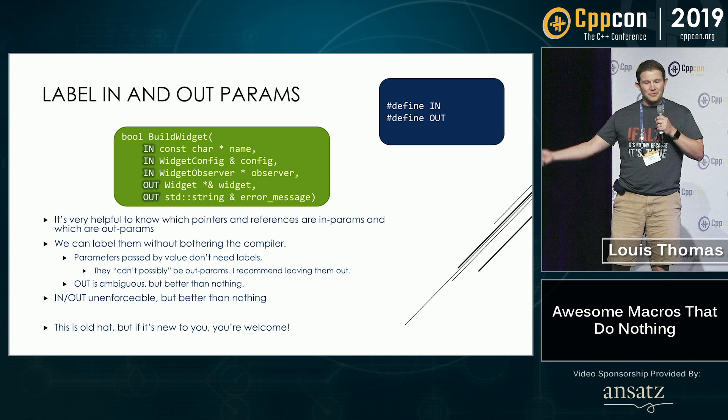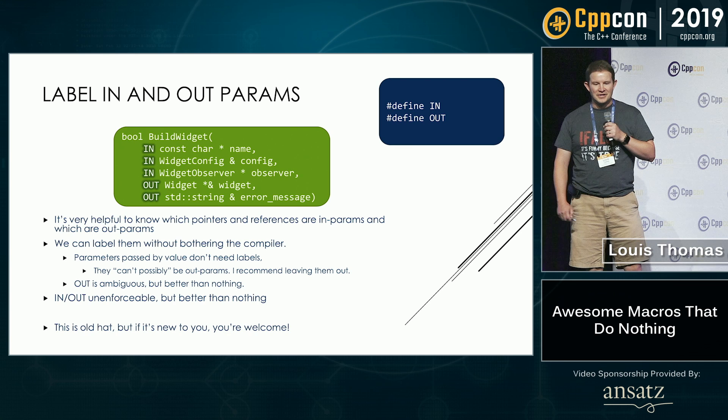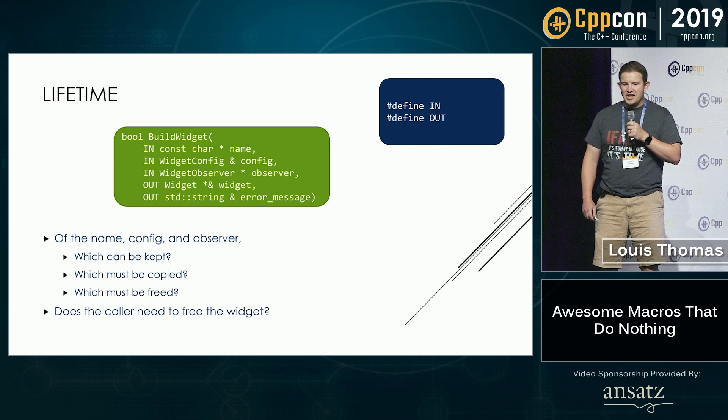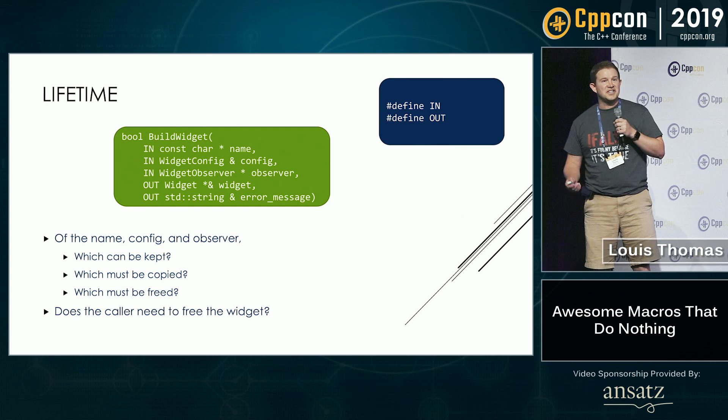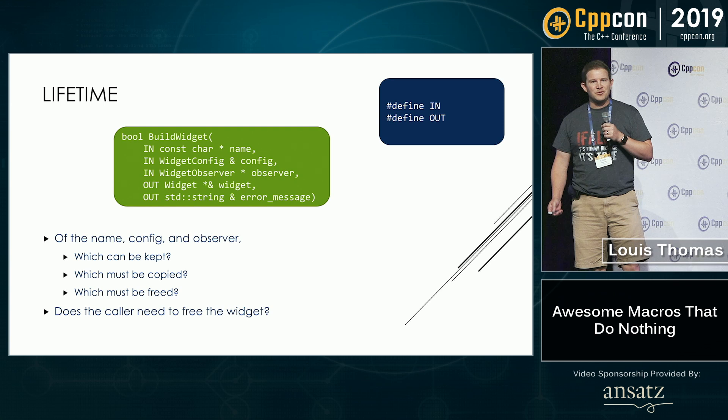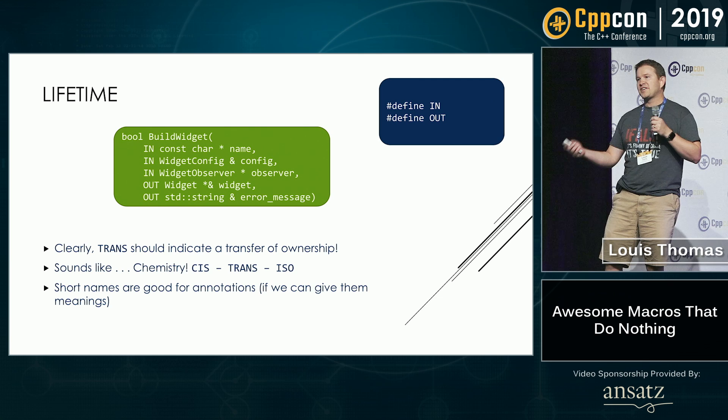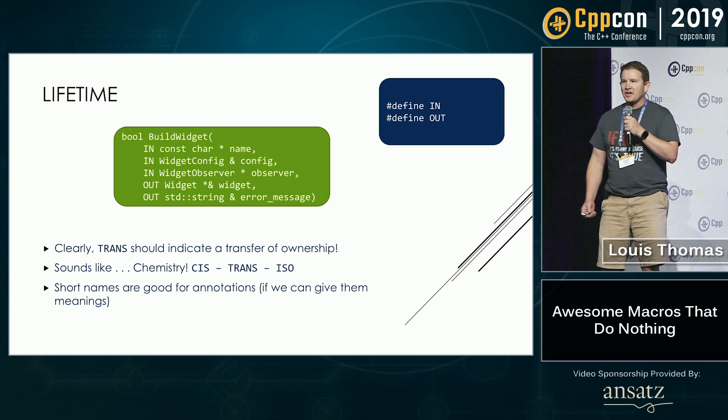So now this is old hat, but if it's new to you, you're welcome. Is there anything else we want to know? What about lifetime? We've got five pointers — which of these can we keep? Which do we need to copy if we want to keep them? Which do we need to free? And what about the output parameter — do we need to free that one? So we could make some labels for those too. Now if we're transferring ownership, 'trans' sounds like a really good label to use.